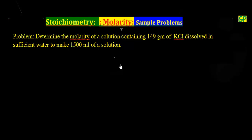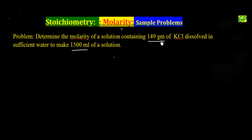This problem is related to finding molarity. The question says: determine the molarity of a solution containing 149 grams of KCl dissolved in sufficient water to make 1500 mL of solution. So the final volume of the solution is 1500 mL and the weight of the solute is 149 grams.